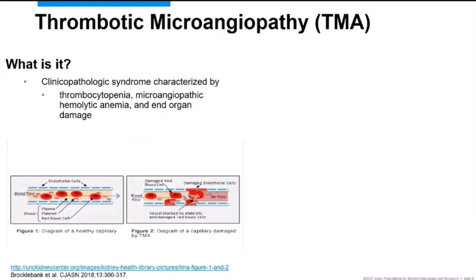A thrombotic microangiopathy (TMA) is a clinical-pathologic syndrome characterized by thrombocytopenia, microangiopathic hemolytic anemia, and end organ damage. In a normal blood vessel, red blood cells, platelets, and white blood cells circulate freely. In TMA, endothelial damage induces microthrombi formation, increasing vascular resistance. Red blood cells are obstructed and sheared as they encounter these microthrombi, causing hemolysis.